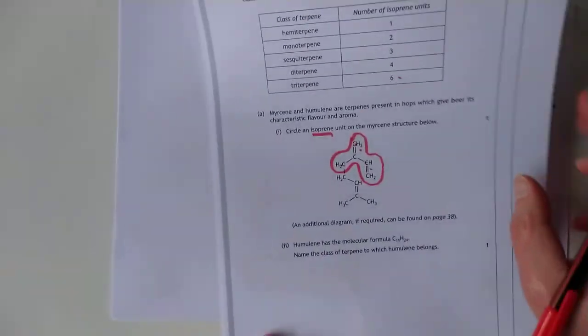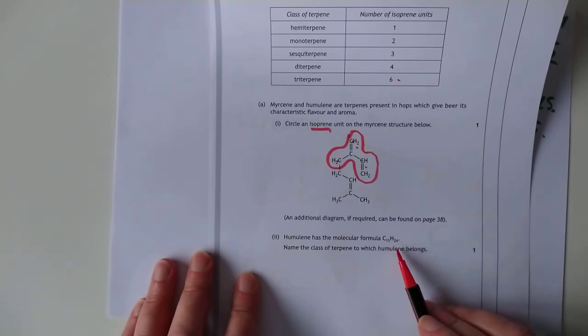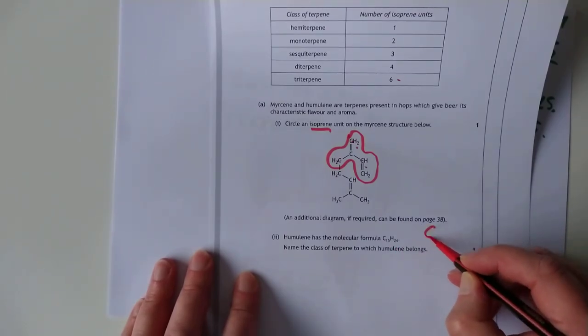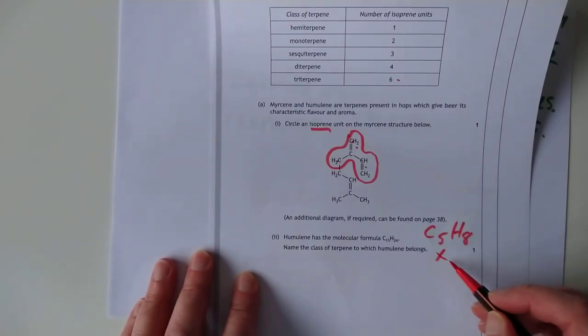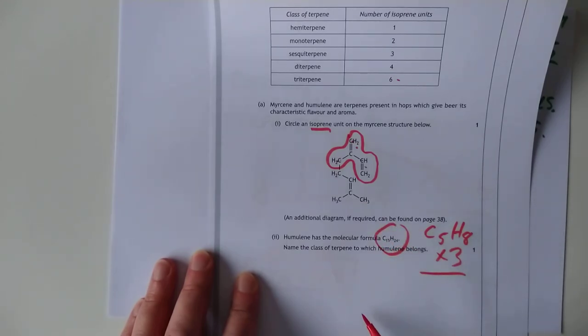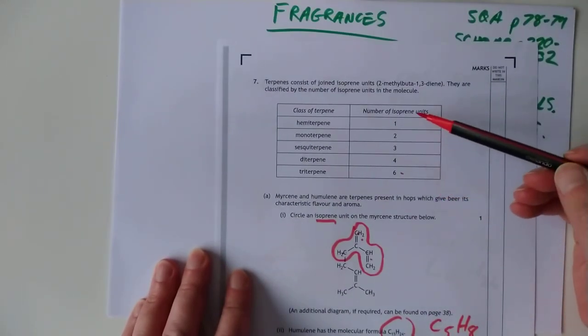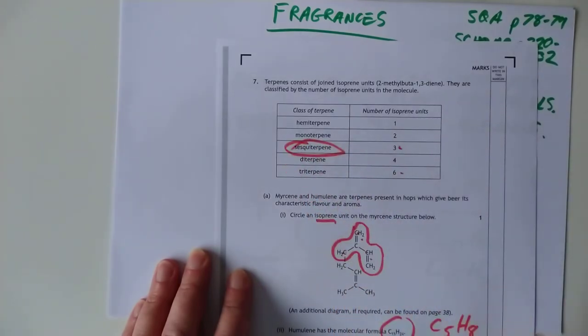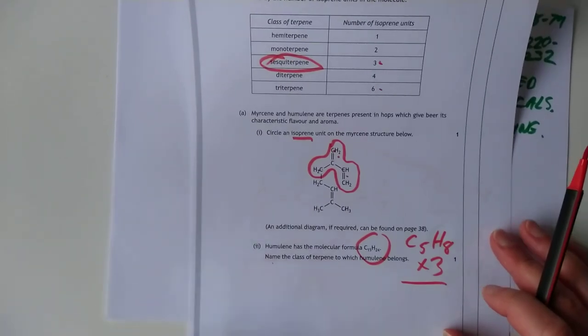Lastly, down here, it says humulene has the molecular formula C15H24. Now, if you remember, each isoprene is C5H8. So that's obviously three isoprenes put together in order to make that formula there. And you've got to use this information here to name the type of terpene. Well, three isoprene units is a sesquiterpene. So that's your problem solving relatively easy two marks to do with terpenes.